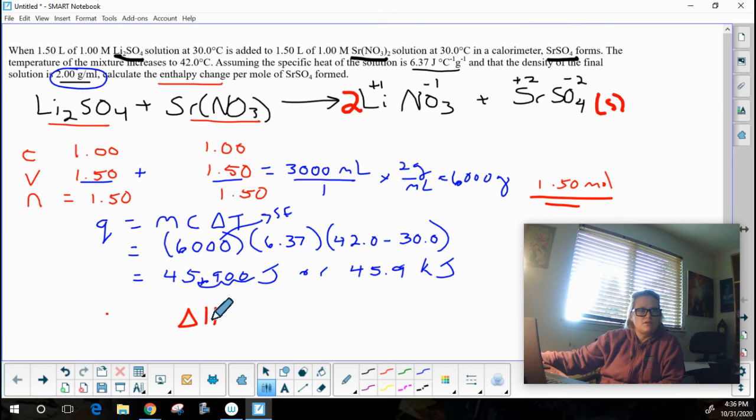So to get my enthalpy, it's simply going to be the 45.9 kilojoules for every 1.50 moles.